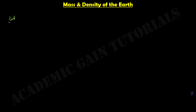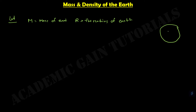Let us consider the mass of our Earth is capital M, and capital R equals the radius of the Earth. Suppose this is our Earth, which has mass M and radius R, and here is an object which has a mass of small m.